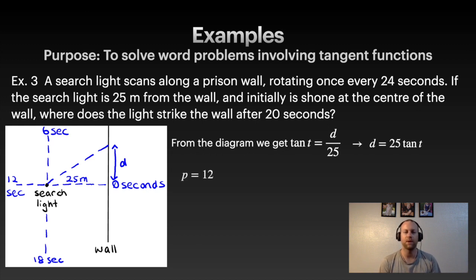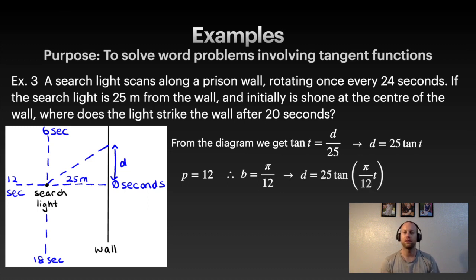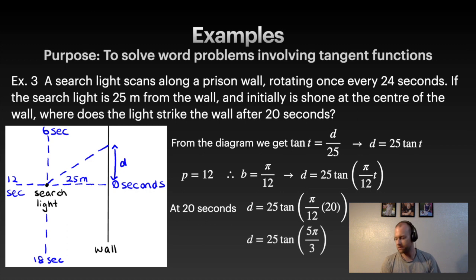The b value comes from 2π over the period — but since the tangent period is π, b = π/period. The searchlight rotates fully in 24 seconds, but the tangent period is half a full rotation, so the period is 12 seconds. Therefore b = π/12. Our equation becomes d = 25 tan(π/12 · t). Plugging in t = 20 seconds gives d = −43.4 meters, meaning the light strikes 43.4 meters below center on the wall.